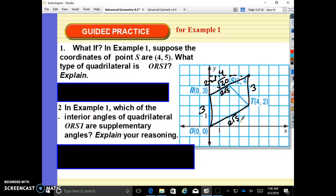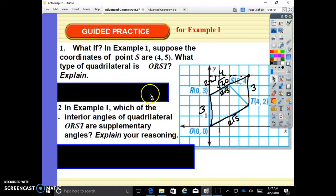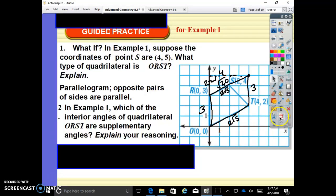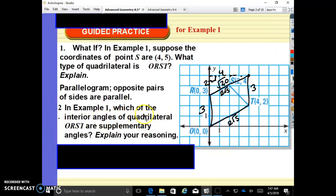Any other guesses? It is a parallelogram. It has two sets of parallel sides. We have an undefined slope here, undefined slope here. This slope right here is rise one over two. We have the same slope here. This thing is called a parallelogram. Opposite pairs of sides are parallel. Which of the interior angles of quadrilateral ORST are supplementary angles? Explain your reasoning.